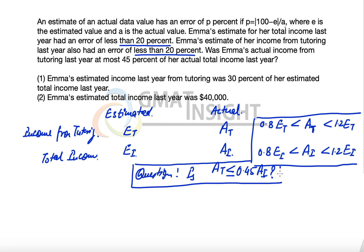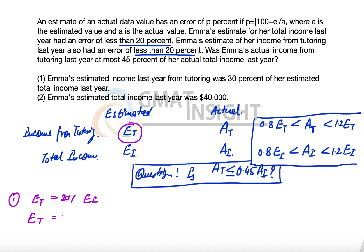To answer this, we need a relationship between AT and AI. Statement 1 says Emma's estimated income from tutoring, ET, was 30% of her estimated total income EI. So ET equals 0.3 times EI. What we need to determine is whether AT is less than or equal to 0.45 times AI.